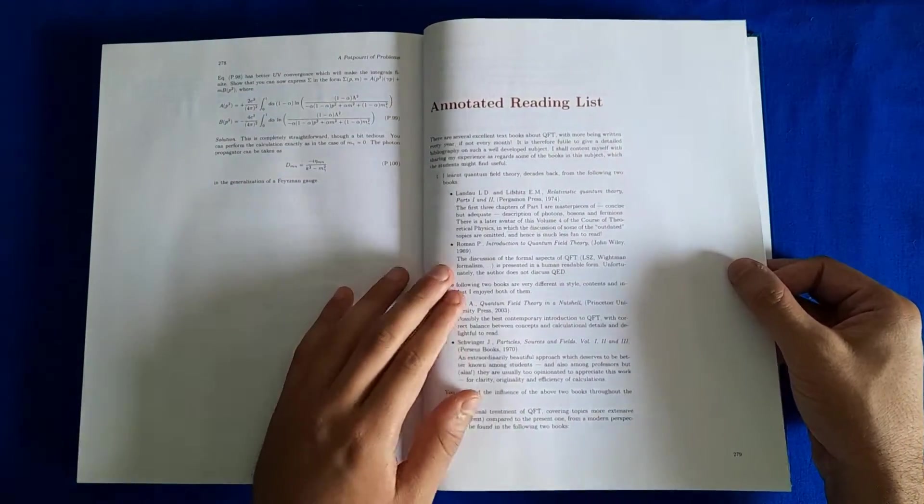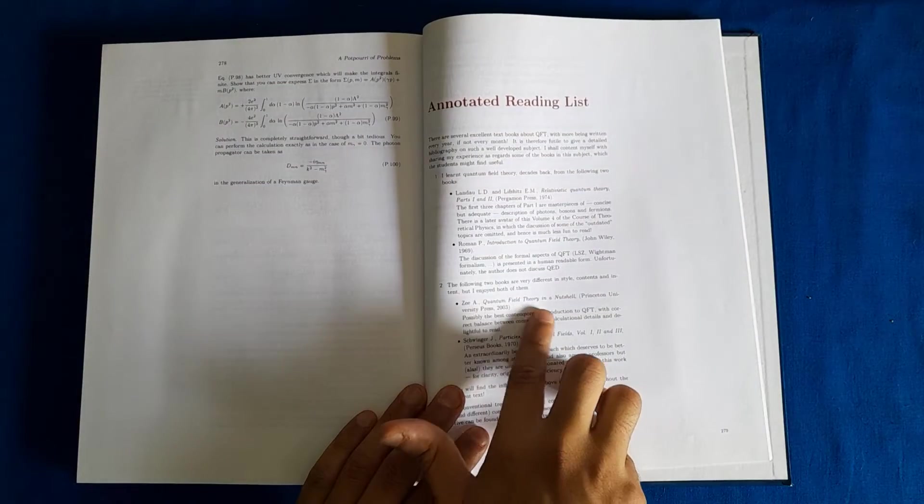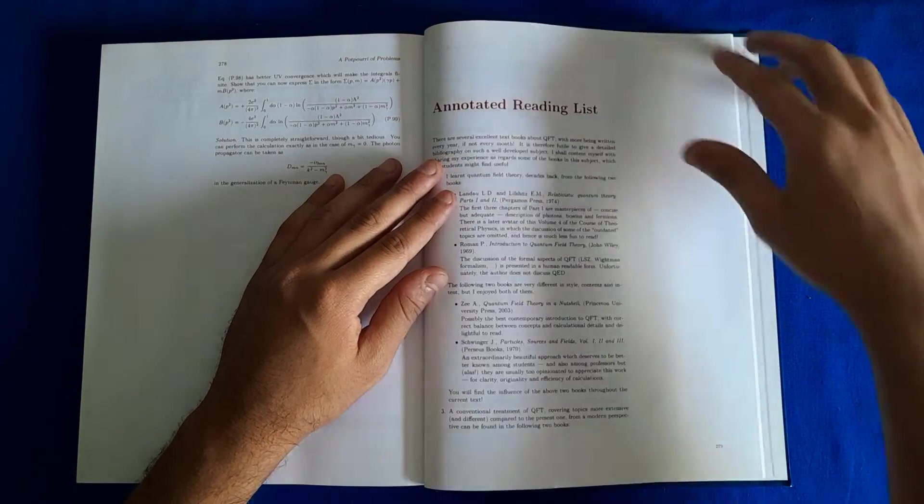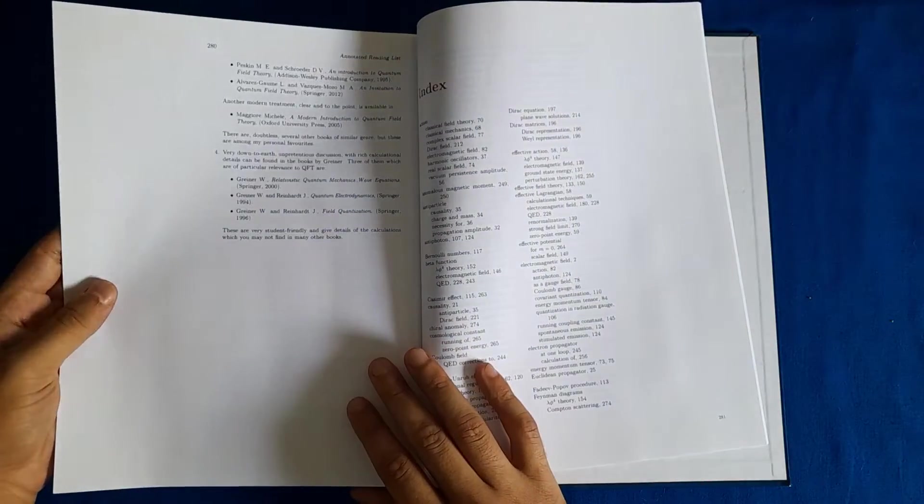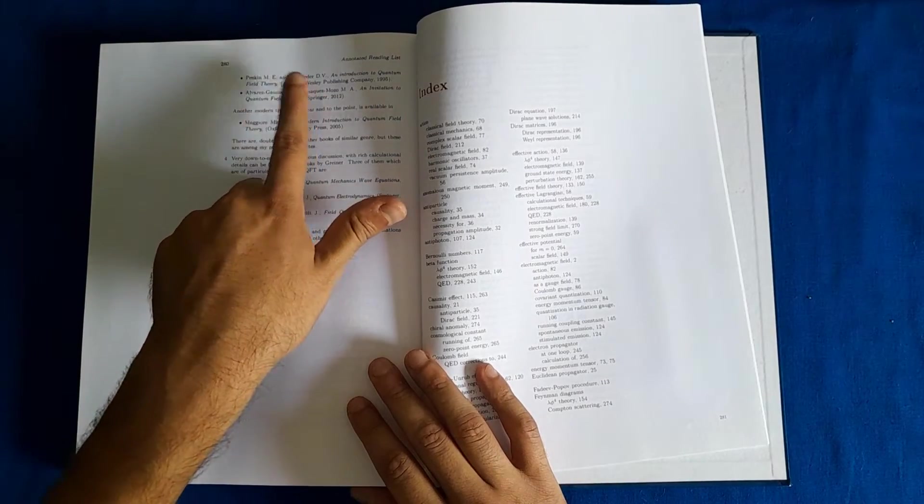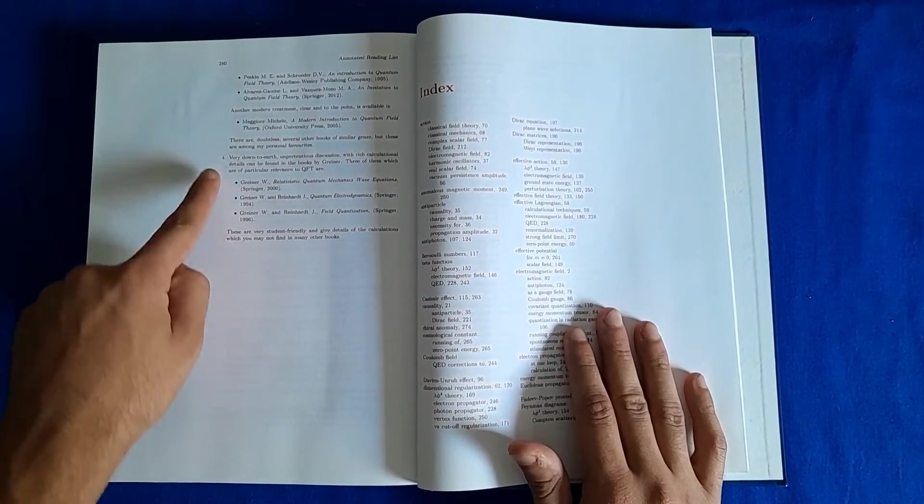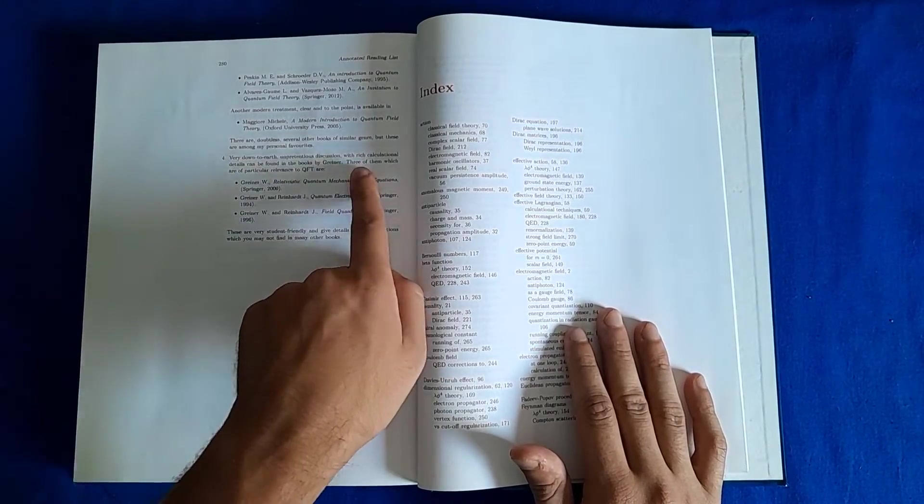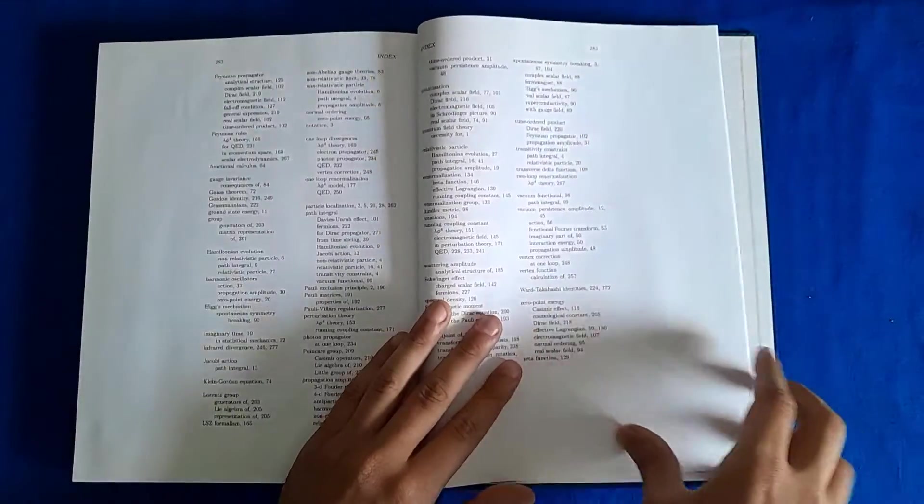List of books that are recommended: there's Landau Lifshitz, then there's Quantum Field Theory in a Nutshell by Anthony Zee, which I had also gone through and found it very interesting. There's Particle Sources and Fields by Schwinger, Peskin and Schroeder which is a standard textbook, and then there are a couple of books, recommended books come from Walter Greiner, which are rich in calculation details.